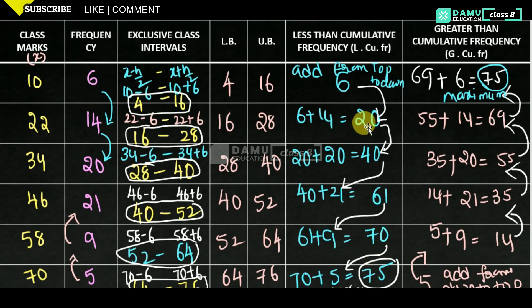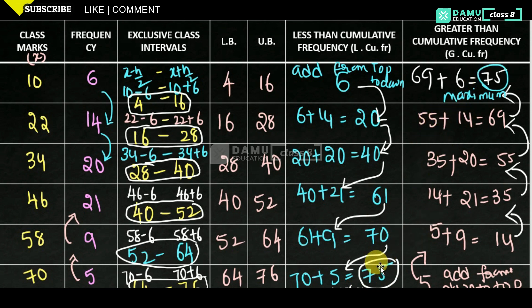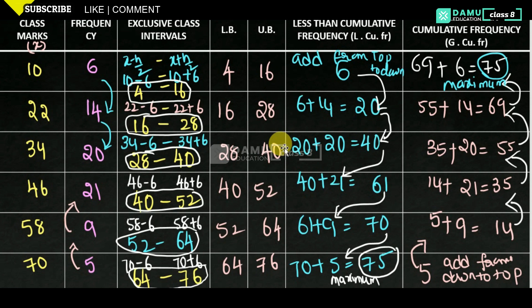What you can observe is both maximum values are same. The greatest greater-than cumulative frequency and the highest less-than cumulative frequency are equal — that is one thing to observe. Also, in exclusive class intervals, lower limits and upper limits equal lower boundaries and upper boundaries respectively. Remember these two conditions.